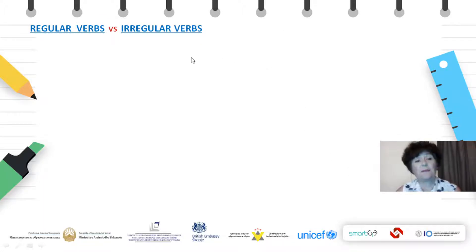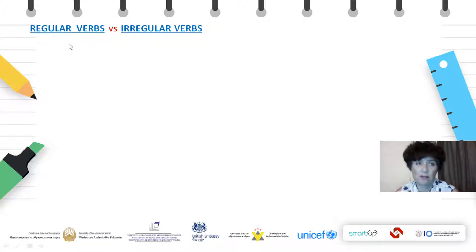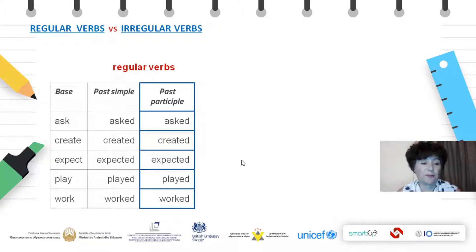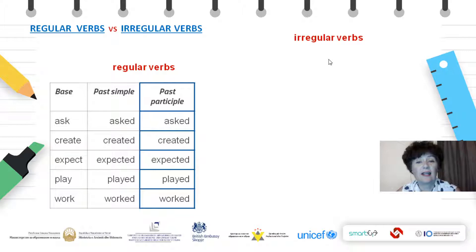Before we continue, let's have a look at the difference between regular and irregular verbs, from which one of their forms are the past participle forms. Regular verbs first of all. You see the base form, past simple form, past participles. There is something very obvious in this table. I hope you can see it. Now let's have a look at the irregular verbs.